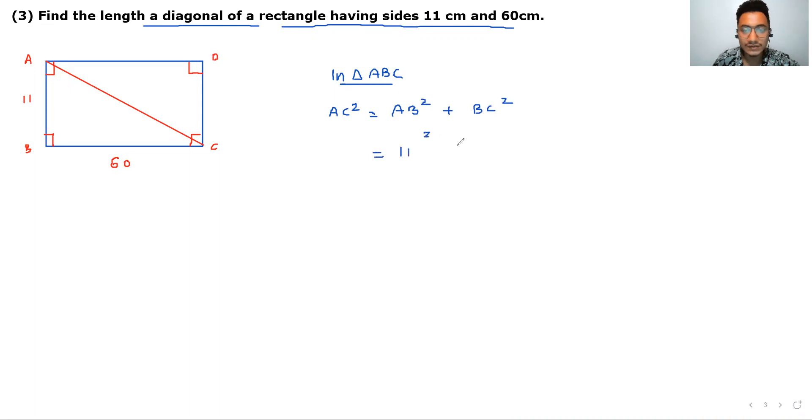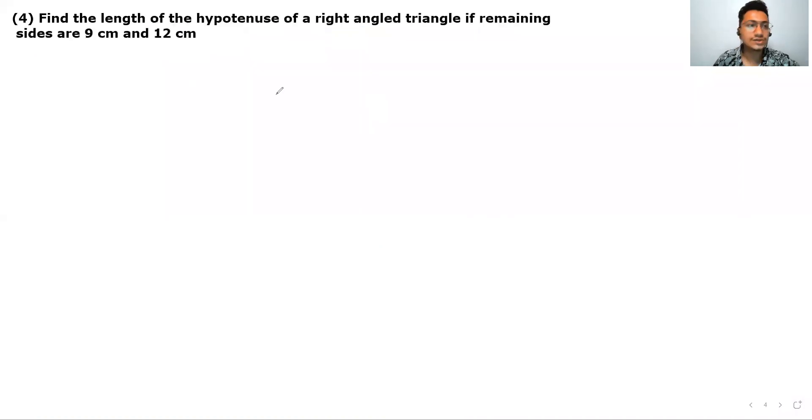So what is AB square? 11 square plus 60 square. So your answer is 121 plus 3600, total is 3721. But this is AC square. I need to find out AC. What is AC? AC is equal to 61.